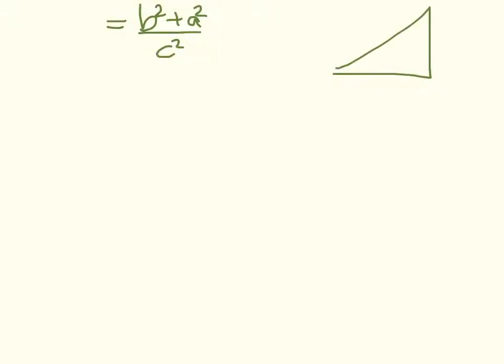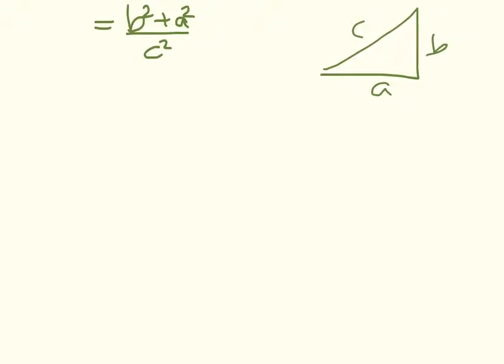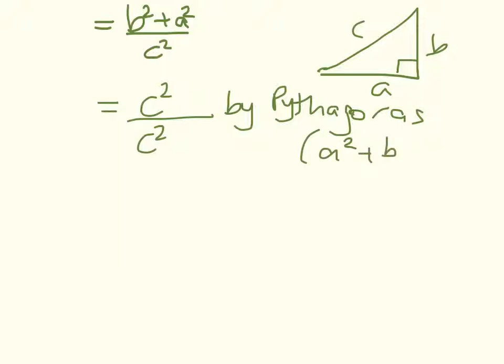Remember our triangle looks like this with a, b, and c. We have got a relationship between a, b, and c because of Pythagoras. So a squared plus b squared equals c squared. So we write down equals c squared over c squared by Pythagoras. So c squared over c squared equals 1, which is the right-hand side. So that's the three building block trig identities. Now we are ready to try some harder ones. So we'll move on to that next.